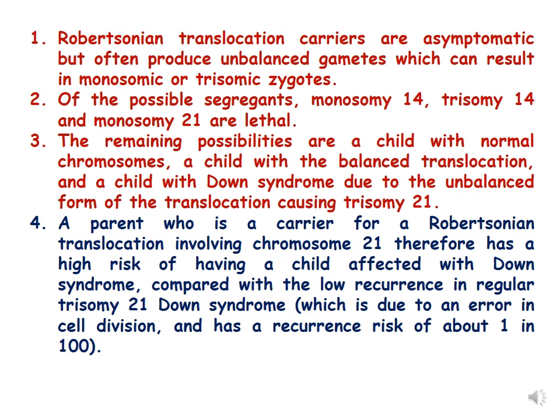Monosomy 21 means one copy of the 21st chromosome is missing — these are lethal. The remaining possibilities are: a child with normal chromosomes, a child with balanced translocation, and a child with Down syndrome due to unbalanced translocation causing trisomy 21. A parent who is a carrier for a Robertsonian translocation involving chromosome 21 therefore has a high risk of having a child with Down syndrome, compared with the low recurrence risk in regular trisomy 21 Down syndrome, which is due to an error in cell division and has a recurrence risk of about 1 in 100.